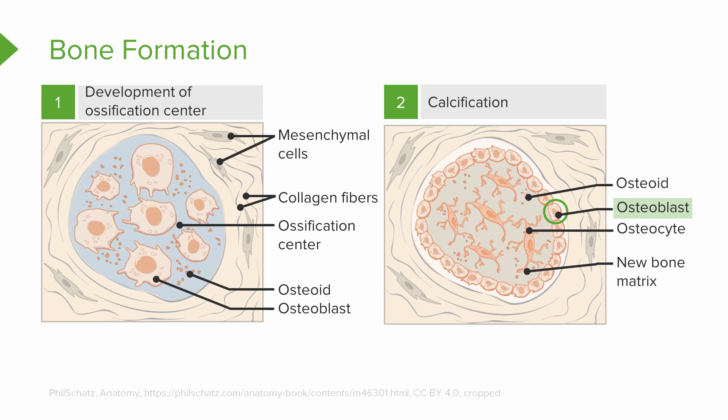In the second step, as the osteoblasts are surrounded by the extracellular matrix that they secrete, they then differentiate into mature osteocyte cells. These osteocytes are now housed inside of little areas called lacunae. From there, bone matrix begins to calcify.